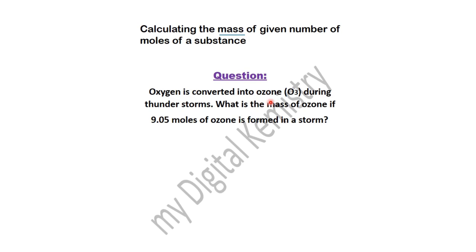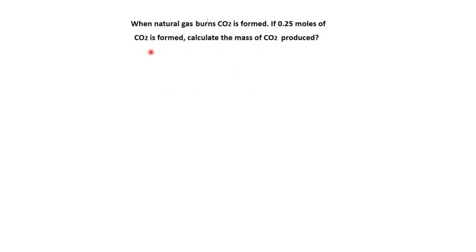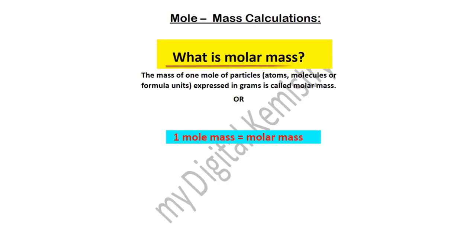Question 1: Oxygen is converted into ozone during thunderstorms. What is the mass of ozone if 9.05 moles of ozone is formed in a storm? Question 2: When natural gas burns, carbon dioxide is formed. If 0.25 moles of carbon dioxide is formed, calculate the mass of carbon dioxide produced.